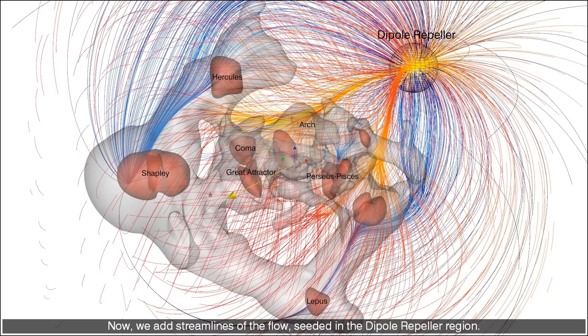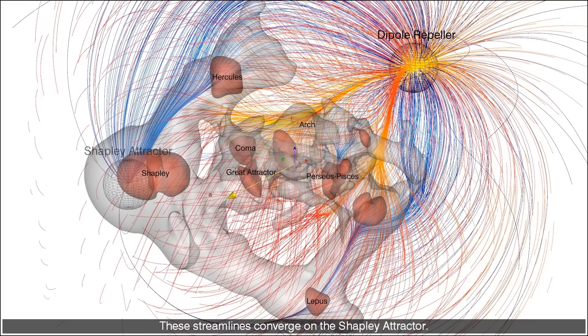Now we add streamlines of the flow seeded in the dipole repeller region. These streamlines converge on the Shapley attractor.